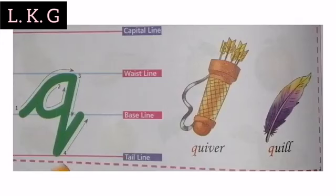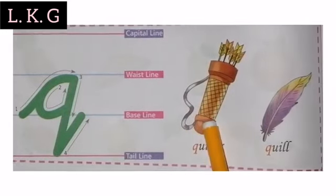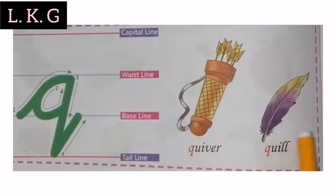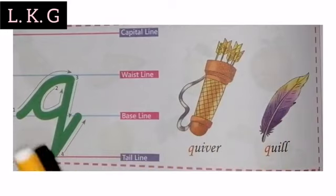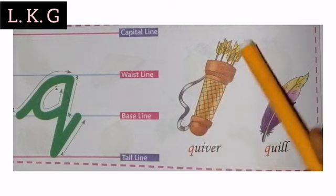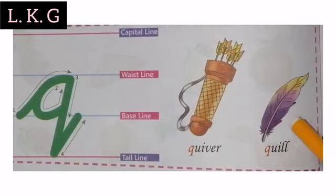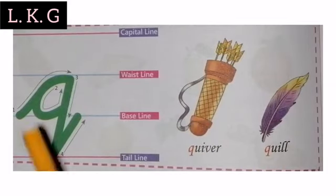Okay, let us start. Q for Queen, Q for Quiver, Q for Quill. Q for Quiver means Turcus. This is a band. Q for Quill — Bird ka Punk. Q for Queen means Rani.